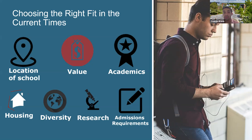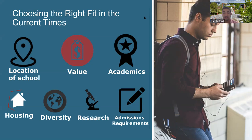Diversity is very important. As an international student, you want to know how many students from your home country attend that university and how many international students overall. Research is very important for gaining hands-on experience that helps you find a job after graduation — find out the research ranking and how you can get involved. Finally, admission requirements: know and understand the admission requirements for each university and how they match your qualifications, meet deadlines, check scholarships and GPA requirements, and get to know your admissions counselor. Talk to us — we will advocate for you and guide you through the right steps.